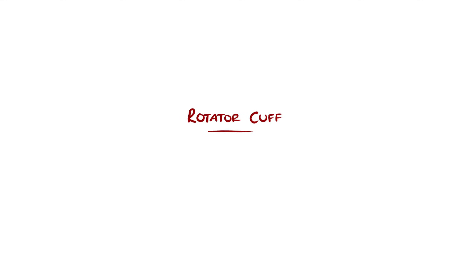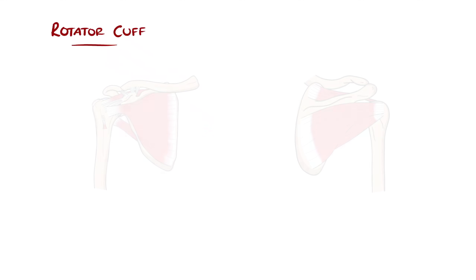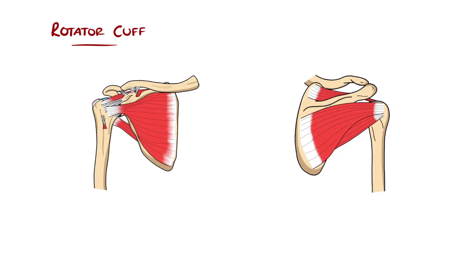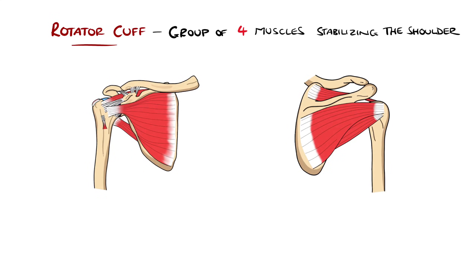The rotator cuff is a group of four muscles and their tendons that stabilizes the shoulder as well as allowing for a wide range of arm movements. It is composed of four muscles, known as the SITS muscles.